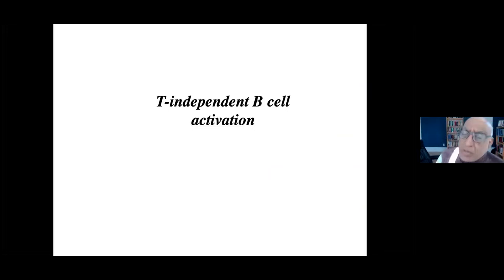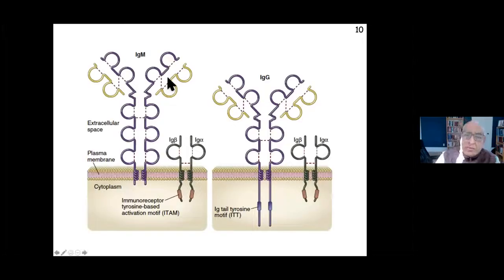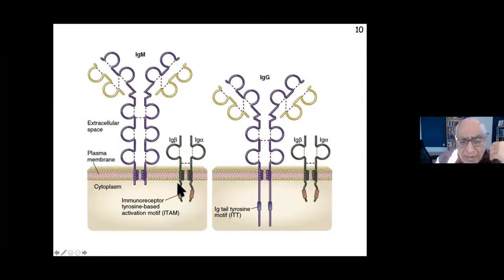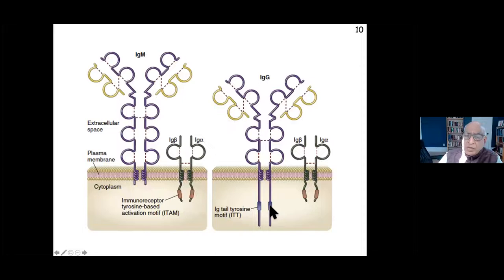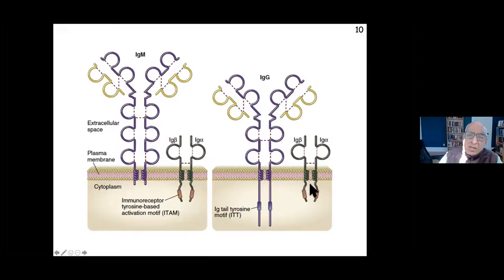T-independent B cell activation starts from the B cell receptor. The IgM type of B cell receptor has associated chains called Igα and Igβ with ITAM motifs. The IgG type also has Igα and Igβ with ITAMs, but IgG additionally has a motif in the tail called an Ig tail tyrosine motif involved in signaling. A memory B cell, which is IgG, will signal much faster in part because of this Ig tail tyrosine motif - not just Igα and Igβ driving signaling.